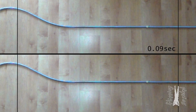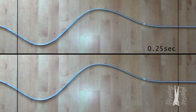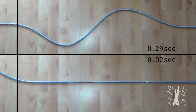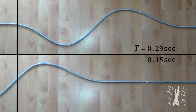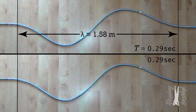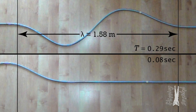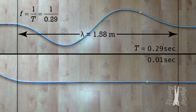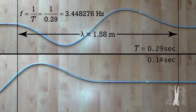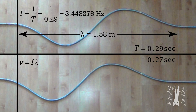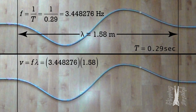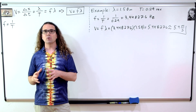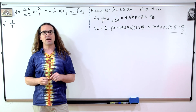Let's measure the period and wavelength of this wave in order to determine the speed of this wave. We can measure the time it takes for one wave to pass by a point, which is the period, and you can see it is 0.29 seconds. And you can see I measured the wavelength of the wave to be 1.58 meters. Bo, please determine the speed of the wave using that information. Frequency equals 1 over period, or 1 over 0.29, which equals 3.448276 hertz. So the speed of the wave equals frequency times wavelength: 3.448276 hertz times 1.58 meters, which equals 5.4 meters per second with two significant digits. We now know the speed of the wave according to the equation we derived.